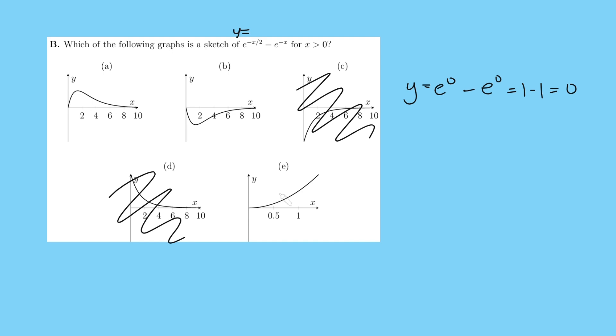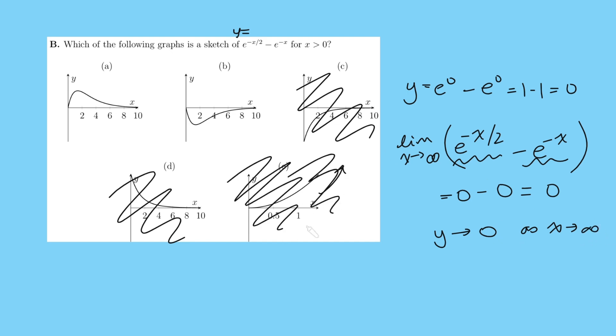Next, what we want to do is perhaps consider the limit as x goes to infinity of this graph. So what's the limit as x goes to infinity of e to the minus x over 2 minus e to the minus x? Well, both of these terms here are going to tend towards 0 because e to the power of a very big negative number will be virtually 0. So this will be 0 minus 0, which is 0. And so therefore, the y values must approach 0 as x tends to infinity. And so that eliminates e because you can see that this one's kind of growing up like that. So it's either a or b.